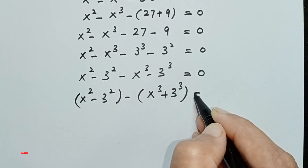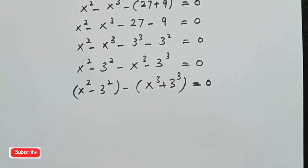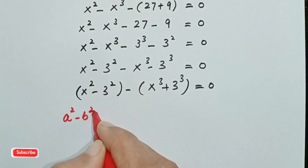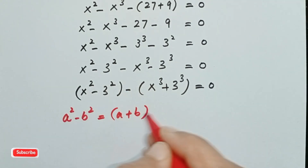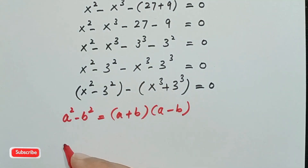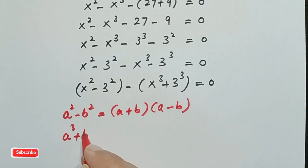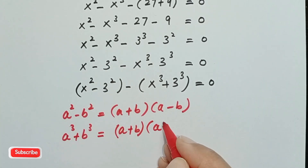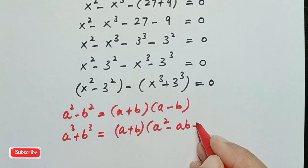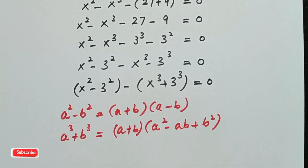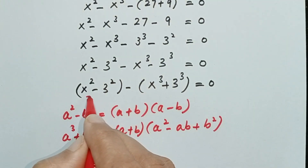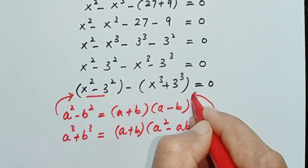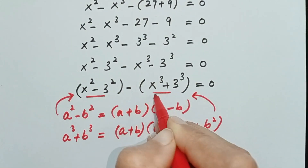We are going to use two basic formulas. The first is: a squared minus b squared equals (a + b)(a − b). The second is: a cubed plus b cubed equals (a + b)(a squared minus ab plus b squared). We will apply the first formula to x squared minus 3 squared, and the second formula to x cubed plus 3 cubed.